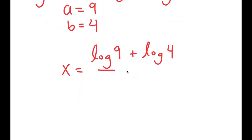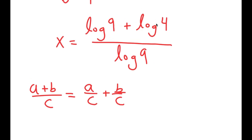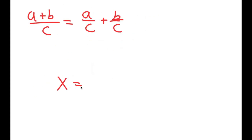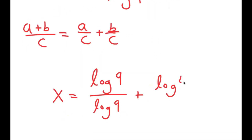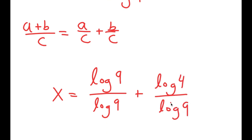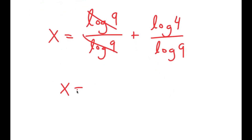Remember, I still have all of this over log 9. Using fraction properties, a plus b over c equals a over c plus b over c. So I rewrite this as log 9 over log 9 plus log 4 over log 9. Since anything over itself equals 1, log 9 over log 9 cancels to 1, giving me 1 plus log 4 over log 9.